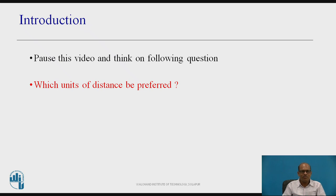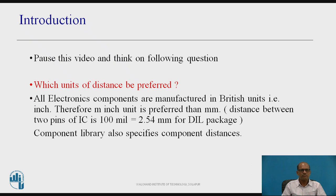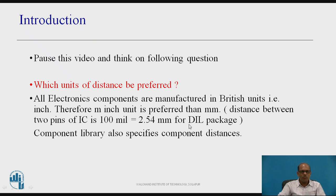Which unit of distance is preferred for PCB layout? Out of mm and inches, inches are preferred because all electronic components are manufactured in British units, i.e., in inch. In inch, 100 mil stands for milli-inch: 100 mil is equal to 2.54 mm, and this is the distance between two pins of an IC for a DIL package. The component library also specifies component distances in mm and inches.